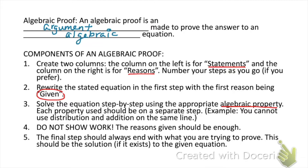Remember, it is okay to do multiple examples of the exact same property in the same step — so like combining like terms on both sides of the equation in the same step. The next important part is that we do not want to show work; the reasons that are given should be enough. And finally, the final step should always end with what you're trying to prove.